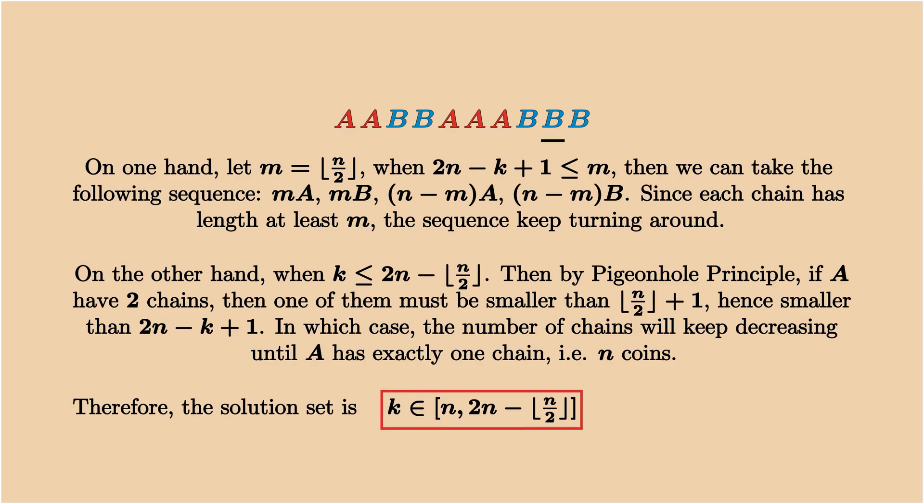So the solution set is all integers k between n and 2n - ⌊n/2⌋. That's it. Hope you enjoyed the solution. See you next time. Bye-bye.